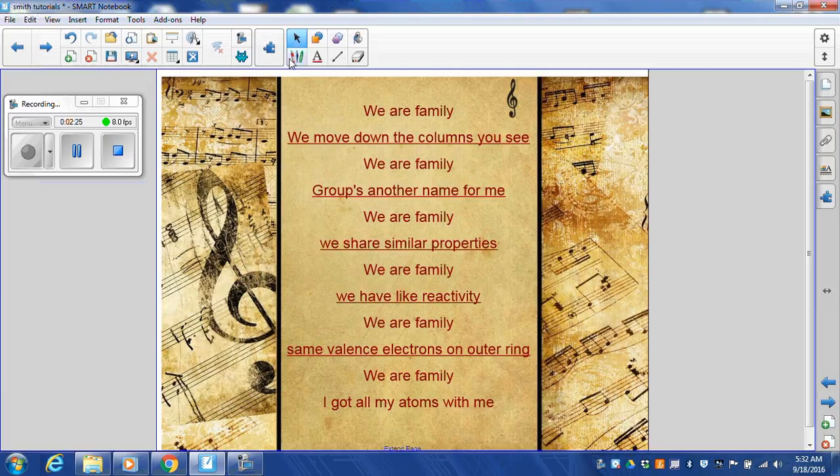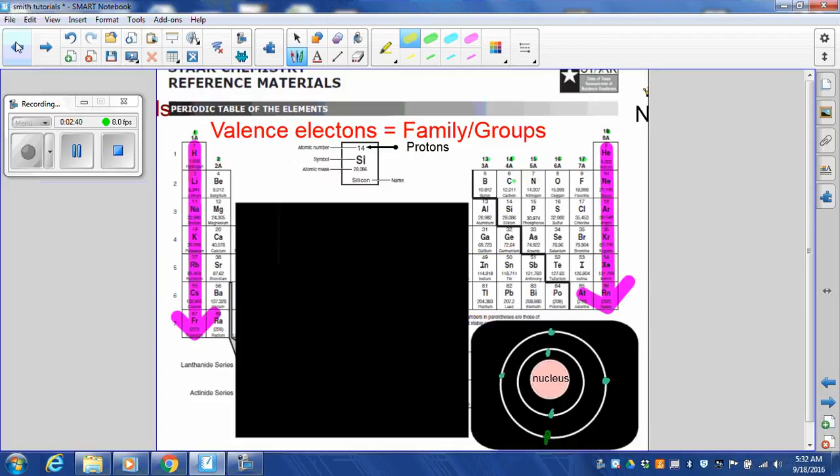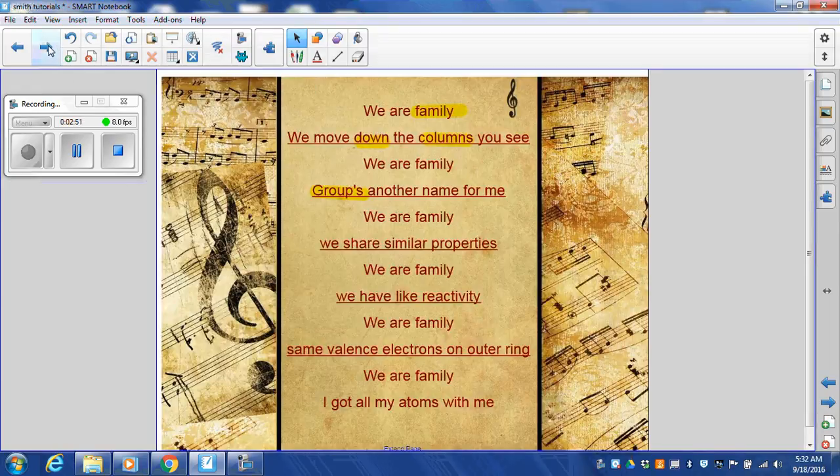Valence electrons tells us what family and element we'll be in on the periodic table. We know that families move down the columns. Another name for family is groups. So valence electrons tell me what group it's in. One valence electron is going to be in family group 1. Two valence electrons, family group 2, and so forth.